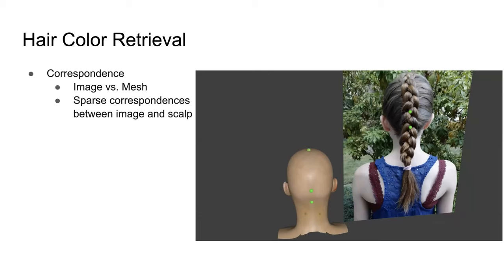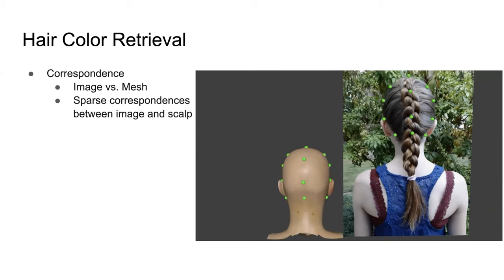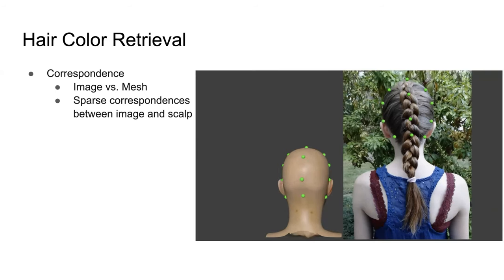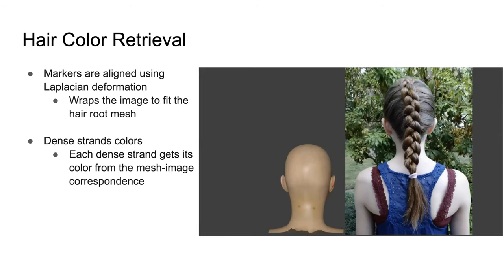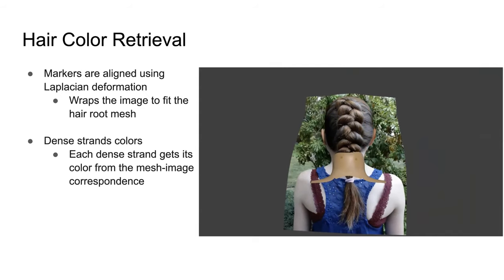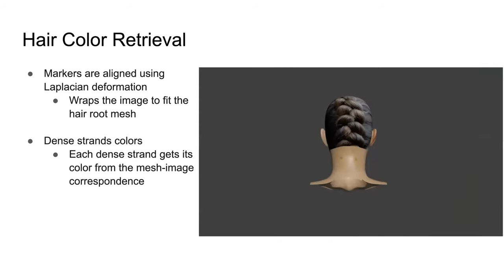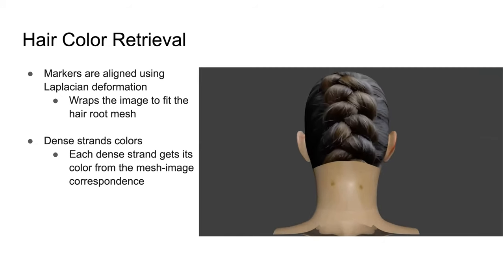We now discuss how hair color from the image space is transferred to the hair strands. We create a correspondence between the hair region of the image and the hair root mesh using user-set sparse correspondences between the image and the hair root mesh. We associate the surface mesh with the image to line up the markers, using them as constraints for Laplacian deformation. The hair root mesh is then texture-mapped based on this correspondence, and each dense hair strand gets its color from the hair root mesh through this texture mapping.